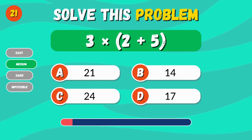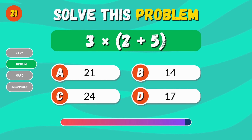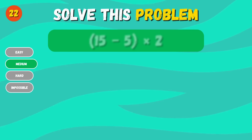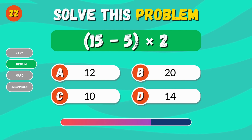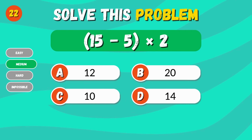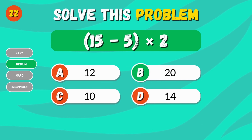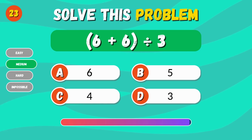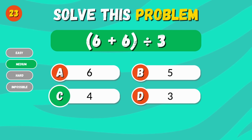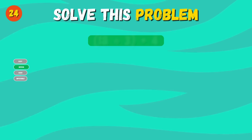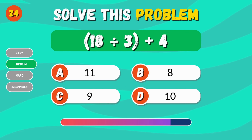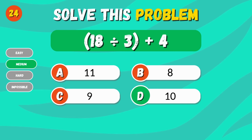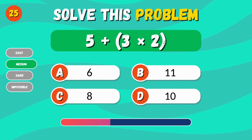3 times 2 plus 5. 21. 15 minus 5 times 2. 20. 6 plus 6 divided by 3. 4. 18 divided by 3 plus 4. 10. 5 plus 3 times 2. 10.